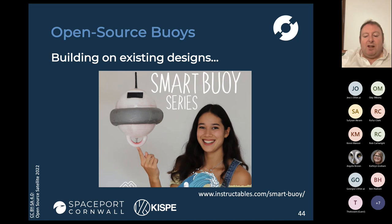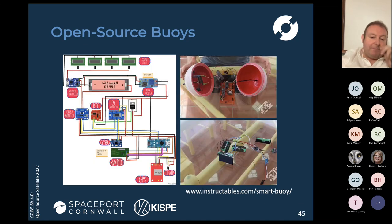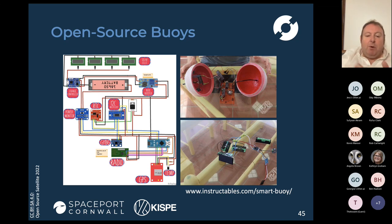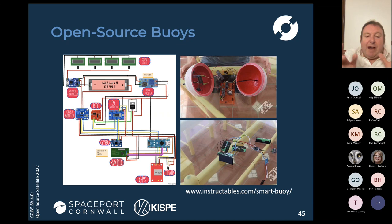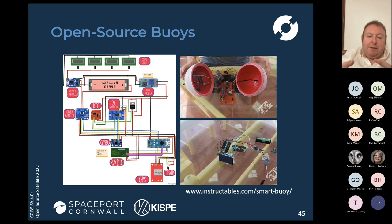We've been using these as a starting point and looking at how to take them forwards. What you're talking about are small buoy designs drawing upon readily available electronic modules — whether bought from Adafruit, SparkFun, or even Amazon. You can buy many of the parts we need for the buoys from readily available sources, connect these things together, put them out in the ocean, and make measurements of different properties. We've been using a lot of this material in hackathons, which I'll come back to in a bit.